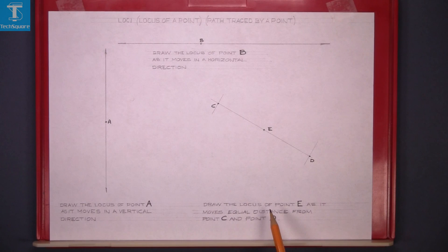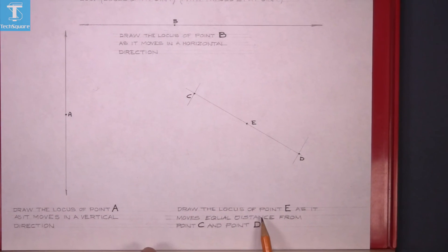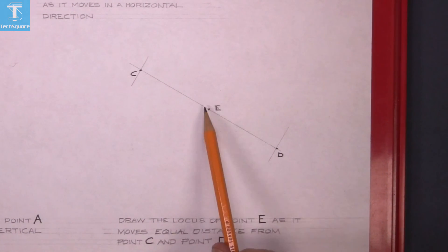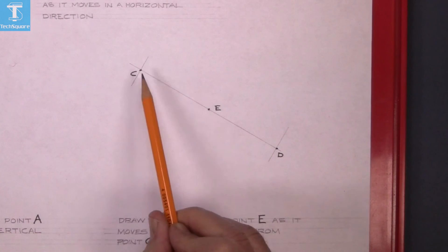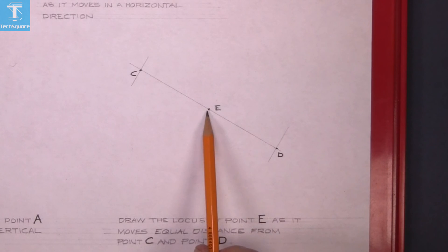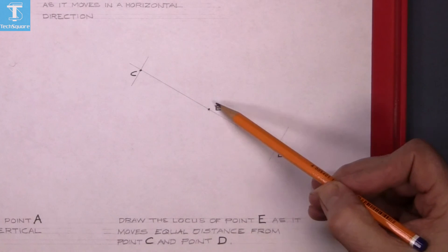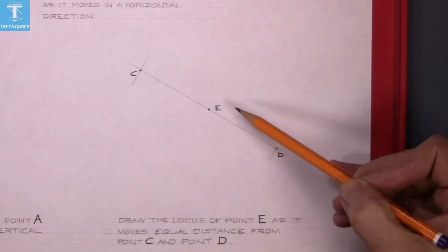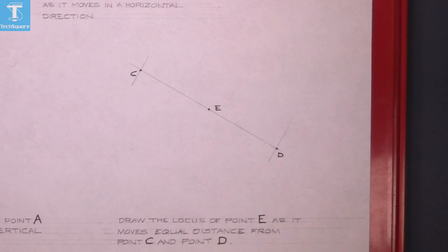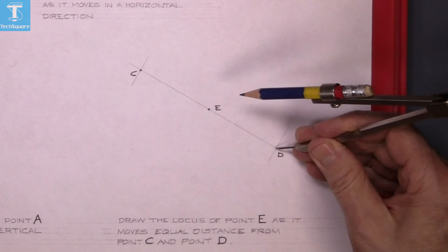This next question here is: draw the locus of point E, that's E in the center there, as it moves equal distance from point C and D. So E is in the center between C and D. So each point has to be the same distance from C as it is from D.